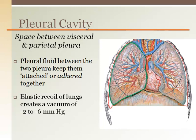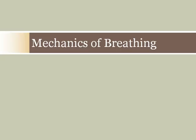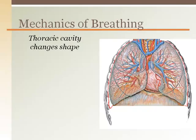The lungs' elastic components make it want to pull inward, making the pressure in the pleural space slightly negative. The pleural cavity is essential for us to breathe. The thoracic cavity changes shape, either expanding or recoiling, which draws in or pushes out the air. As the thoracic cavity changes shape, the lungs follow due to the visceral and parietal pleural relationship.